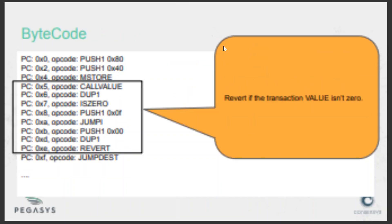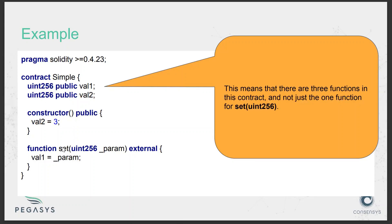The function selector is the first four bytes of the Keccak-256 hash of the function signature. For example, if we have a function named 'set' that takes a uint256 parameter, the function signature is 'set(uint256)'. The Keccak hash of 'set(uint256)' is computed, and the first four bytes of that hash form the function selector. The first four bytes of the transaction data always contain this function selector, and the remaining bytes contain the encoded arguments.